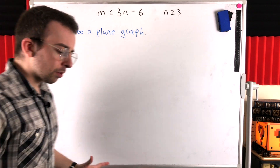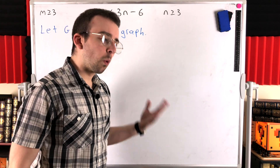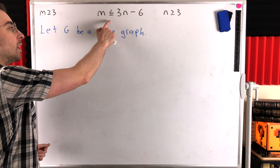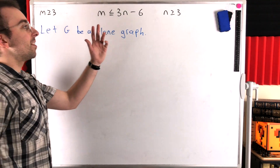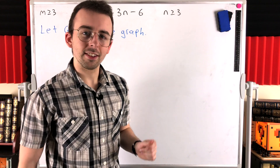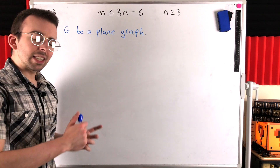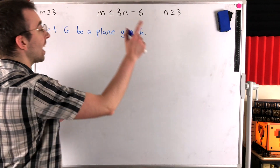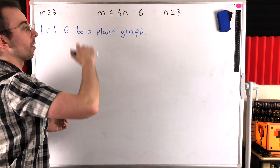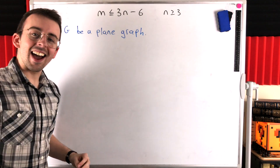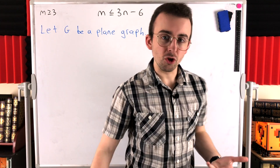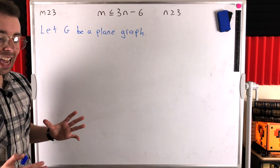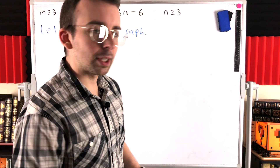We want to use Euler's formula, which involves the order, size, and number of regions of the graph. The inequality we want to prove does not involve the number of regions, so we need to craft a relationship between the regions and either the size or the order of the graph. We'll pick size — we're going to find a relationship between the number of regions in our plane graph and the number of edges.